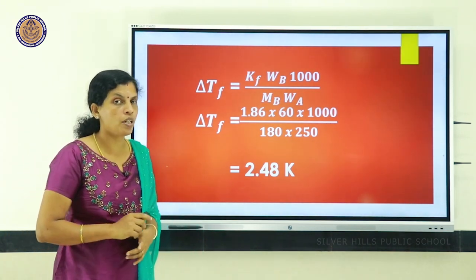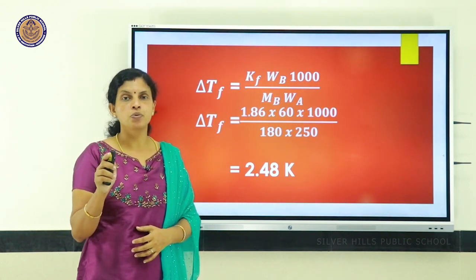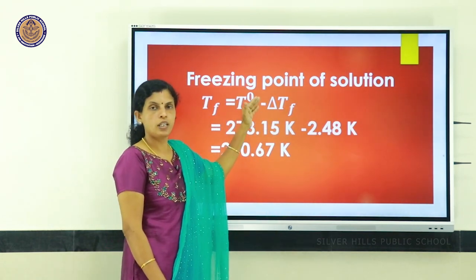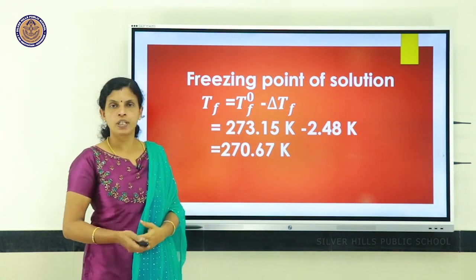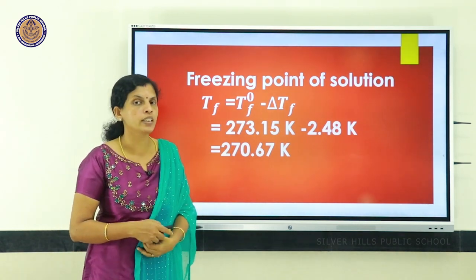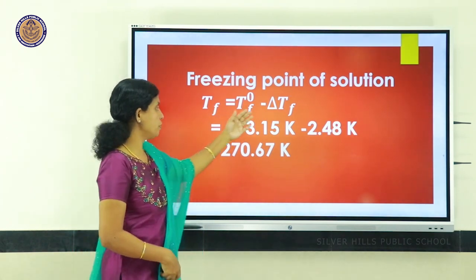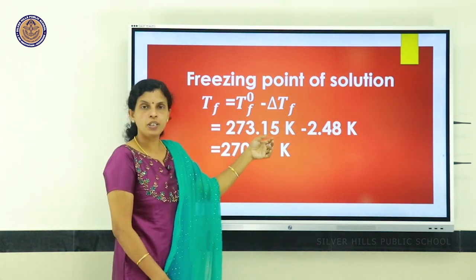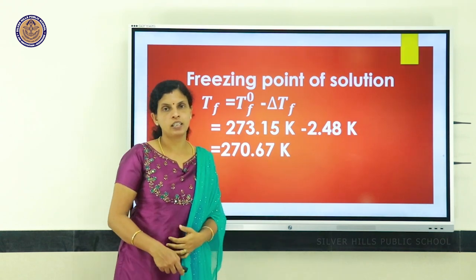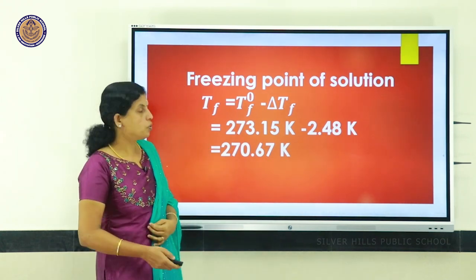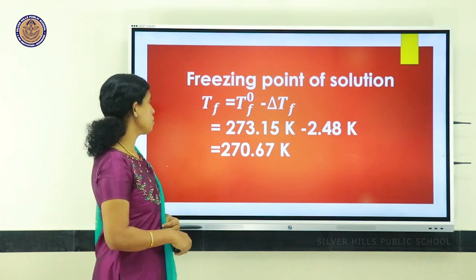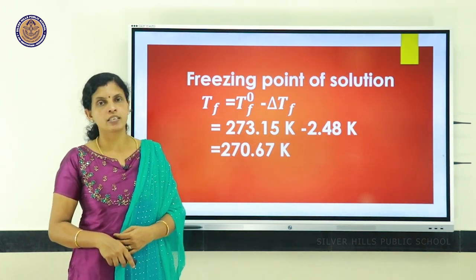To find the freezing point of solution: Tf = Tf⁰ − ΔTf. The solvent is water, so Tf⁰ = 273.15 K. Therefore, Tf = 273.15 − 2.48 = 270.67 Kelvin. This is the freezing point of the glucose solution when 60 grams of glucose is dissolved in 250 grams of water.